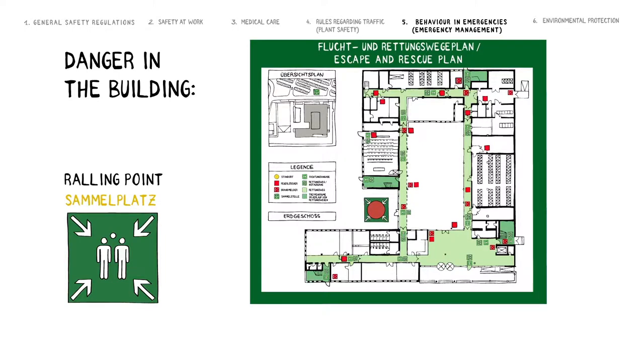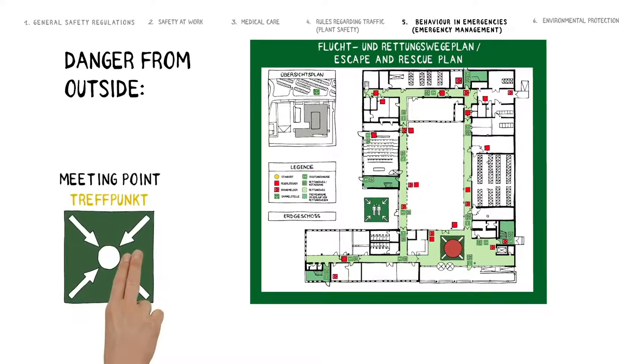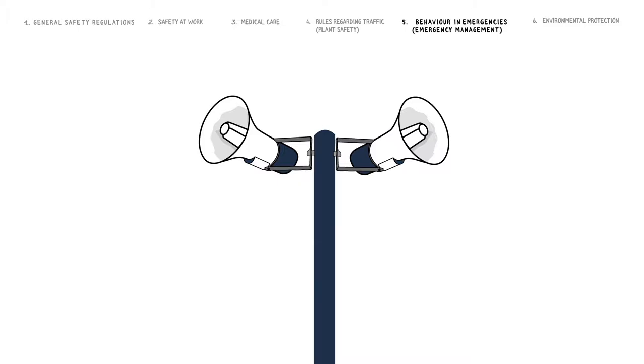If there is a risk of external danger, designated by an alarm signal via the site warning system, go to the nearest meeting place in the building. Wait there for further instructions. Pay attention to the announcements on the site warning system and follow the instructions.